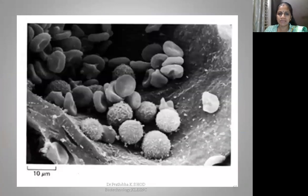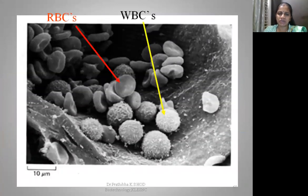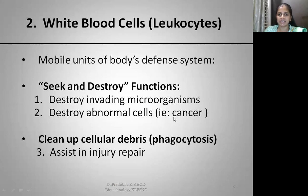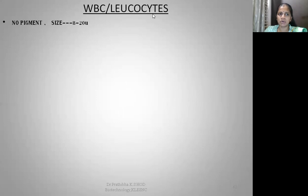Here you can see an electron micrograph representation of RBCs and WBCs. WBCs, also known as leukocytes or white blood corpuscles, are mobile units of the body's defense system. These WBCs seek and destroy foreign bodies. Their functions include destroying invading microorganisms and abnormal cells such as cancer cells. They also assist in injury repair and clean up cellular debris through phagocytosis. WBCs have no pigment, unlike RBCs which contain the heme pigment, making them red.